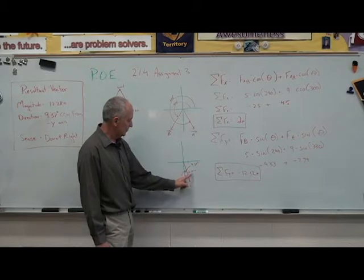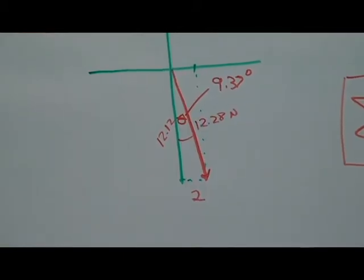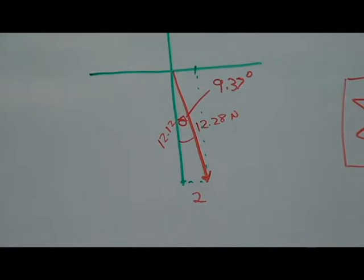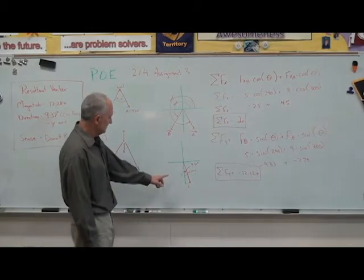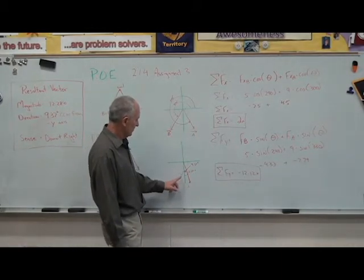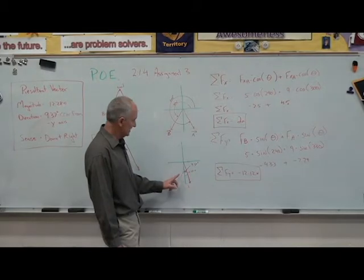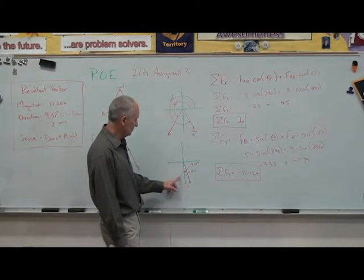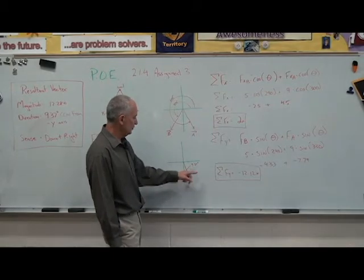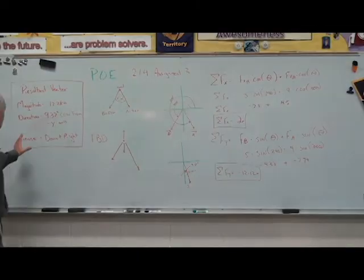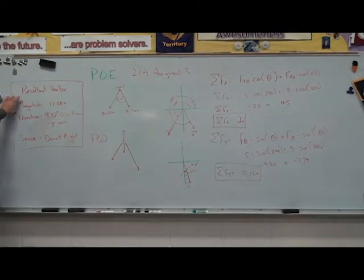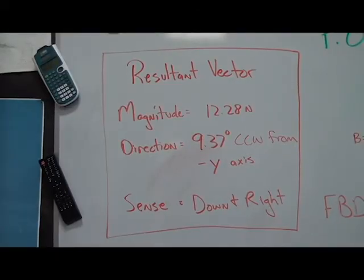To find the resultant angle, I use tangent—opposite over adjacent. I use the inverse tangent of opposite over adjacent, and I get 9.37 degrees. To wrap it all up, the resultant vector has a magnitude of 12.28 newtons and a direction that is 9.37 degrees counterclockwise from the negative y-axis, and its sense is down to the right.